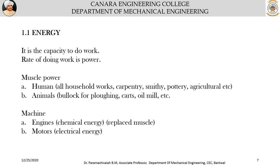Energy — in your previous programs like pre-university or high school studies you have studied about energy. Energy is the capacity to do work. Power is the rate at which work is done — the amount of work done per unit time, whether work done per second or work done per hour, gives the power.